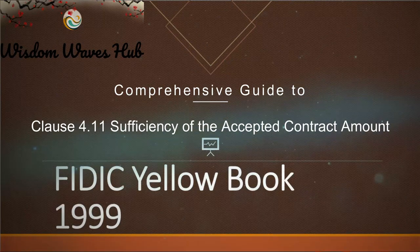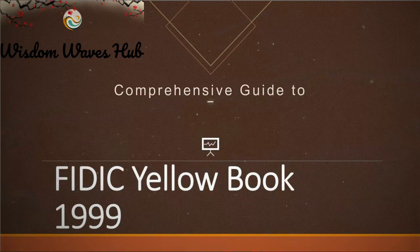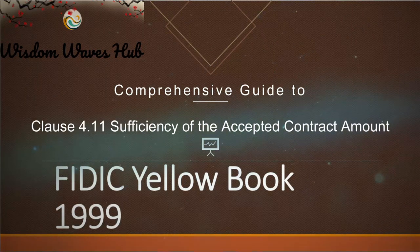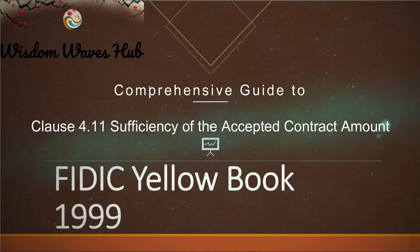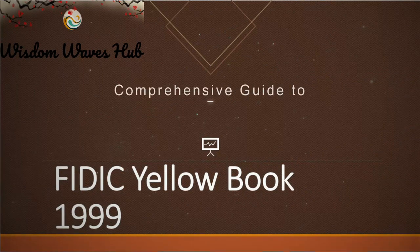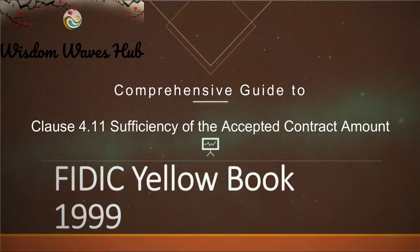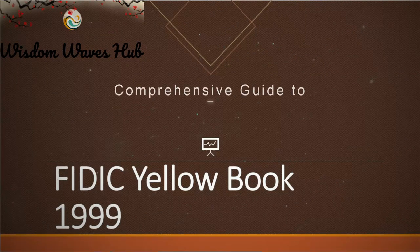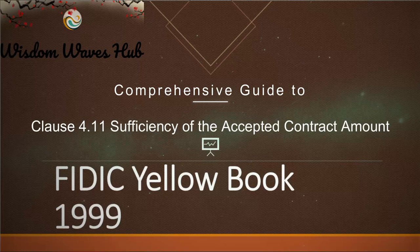So, what's the big deal about this clause? Purpose: Clause 4.11 is like the backbone that ensures the accepted contract amount is meticulously determined to cover all necessary costs and risks linked with a project. Think of it as ensuring you've packed everything you need for a camping trip — you wouldn't want to forget the tent, would you?